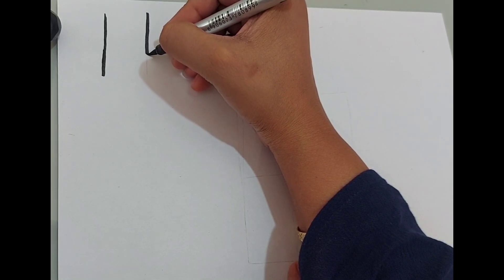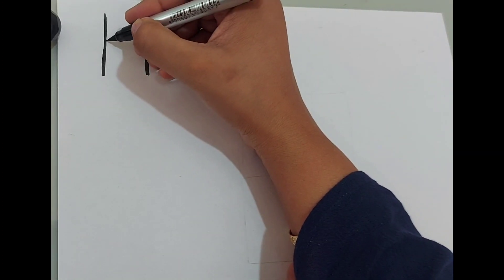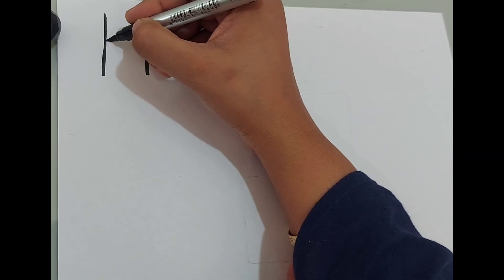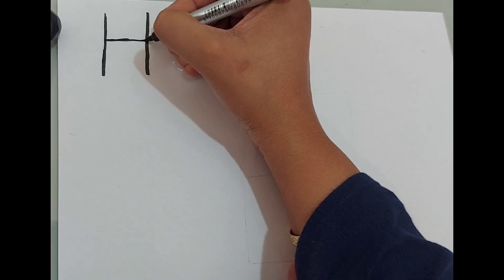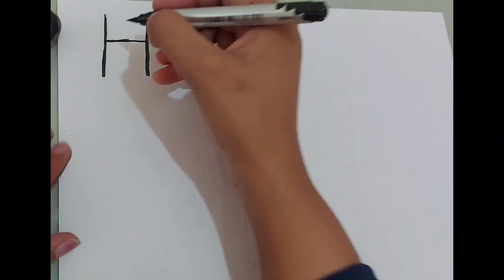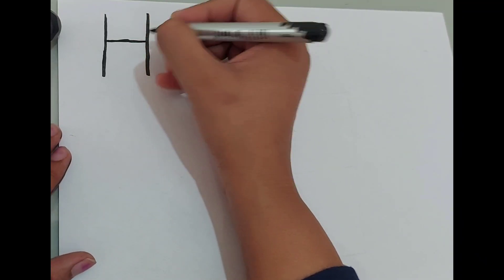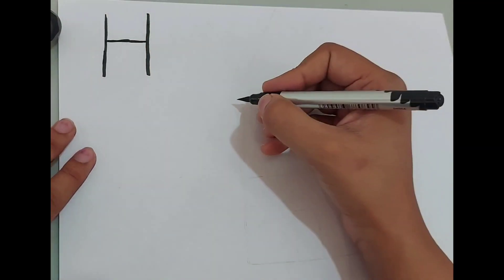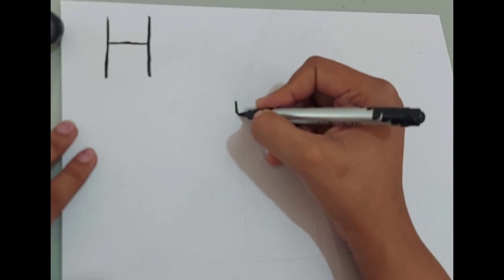Draw two straight lines and then join them. Here is our letter H, alphabet H. So I am going to draw a house with alphabet H.